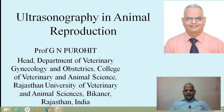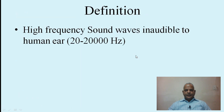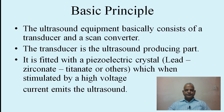What is ultrasound? Ultrasound is a high-frequency sound wave inaudible to the human ear. The frequency of sound waves audible to the human ear varies from 20 to 20,000 Hertz, and anything beyond 20,000 Hertz is known as ultrasound.